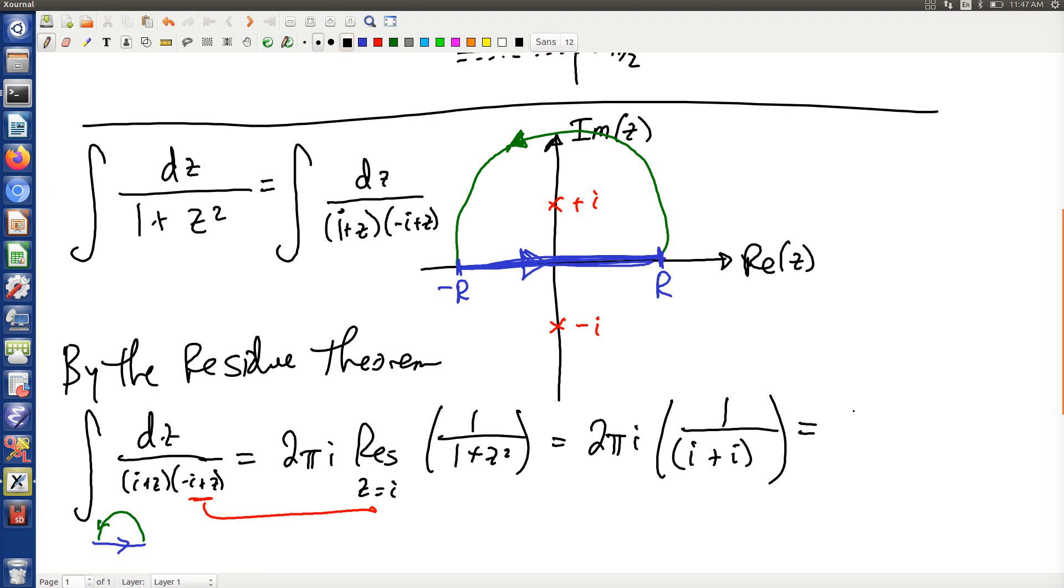This gives us, oh wait, this simplifies, because I have a 2i in the numerator, and now I have two i's in the denominators, that's just pi. Okay.